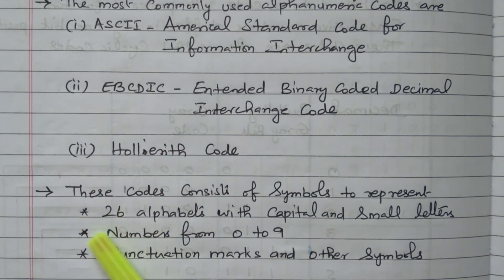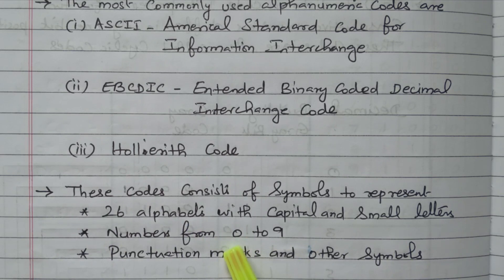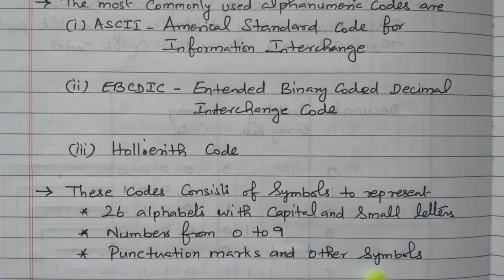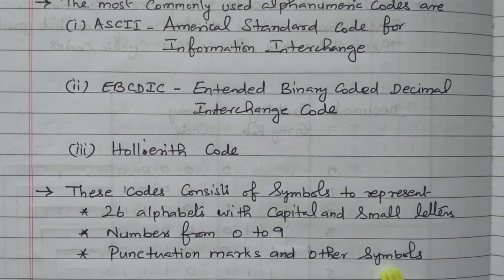In this alphanumeric code, we have 26 alphabets available with capital letters and small letters, and numbers from 0 to 9. Other punctuation marks and special characters are also available. So capital letters, small letters, numbers 0 to 9, punctuation marks, other symbols, and special characters — everything is represented by this alphanumeric code.